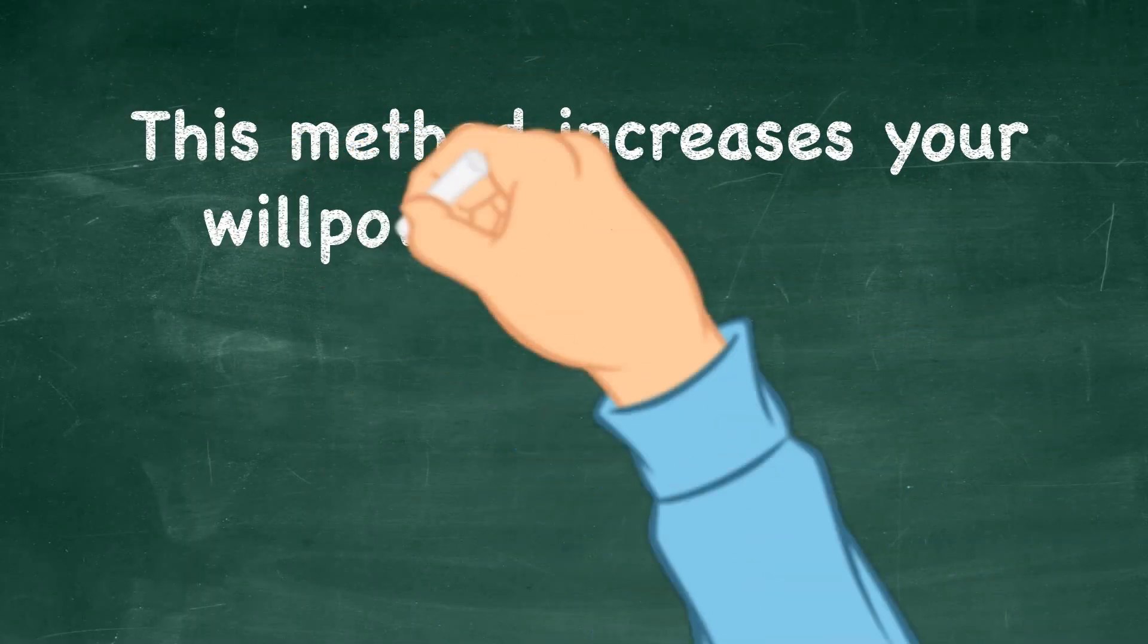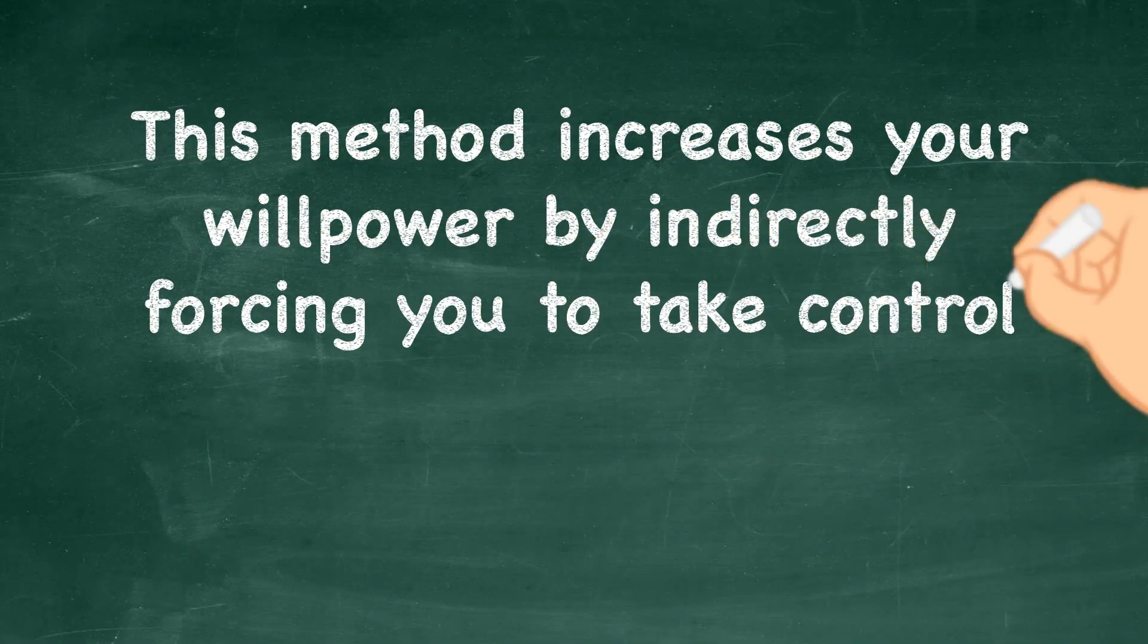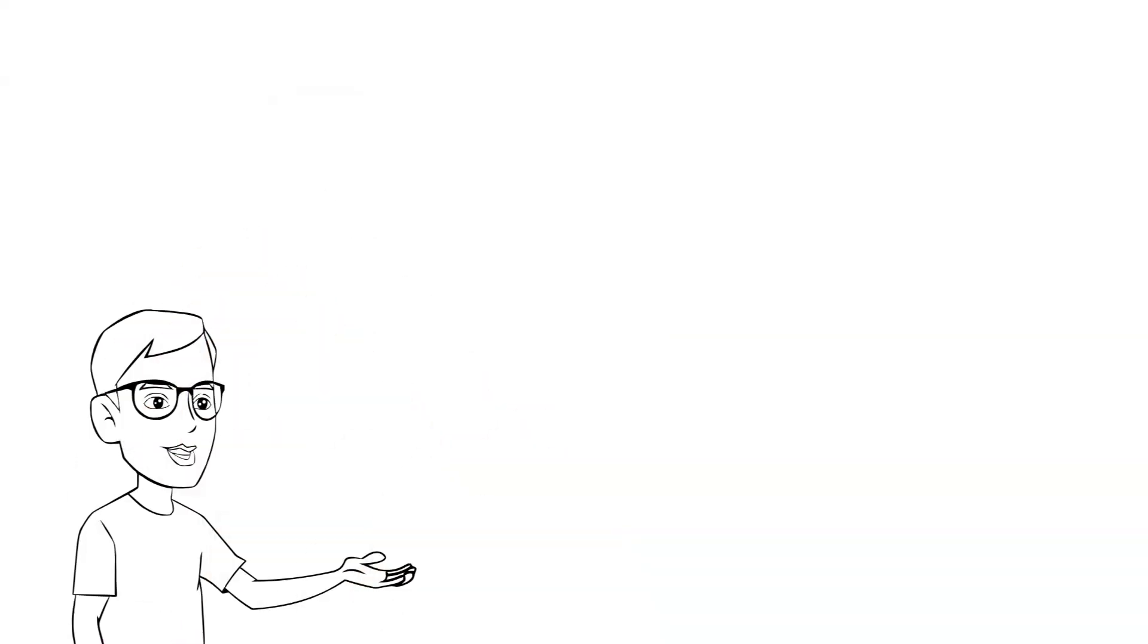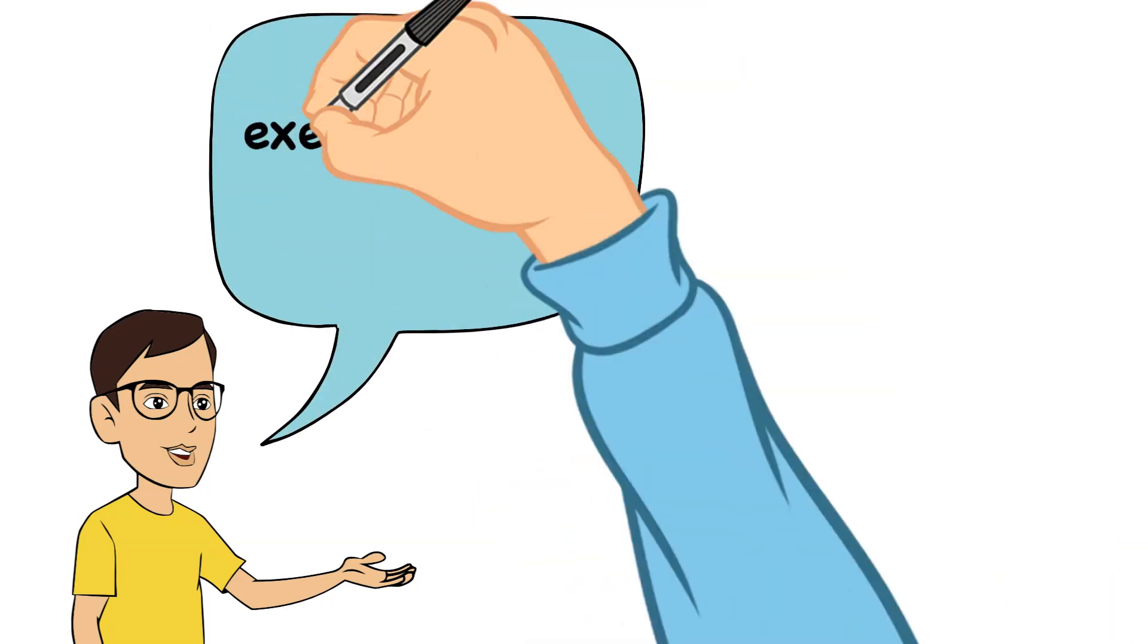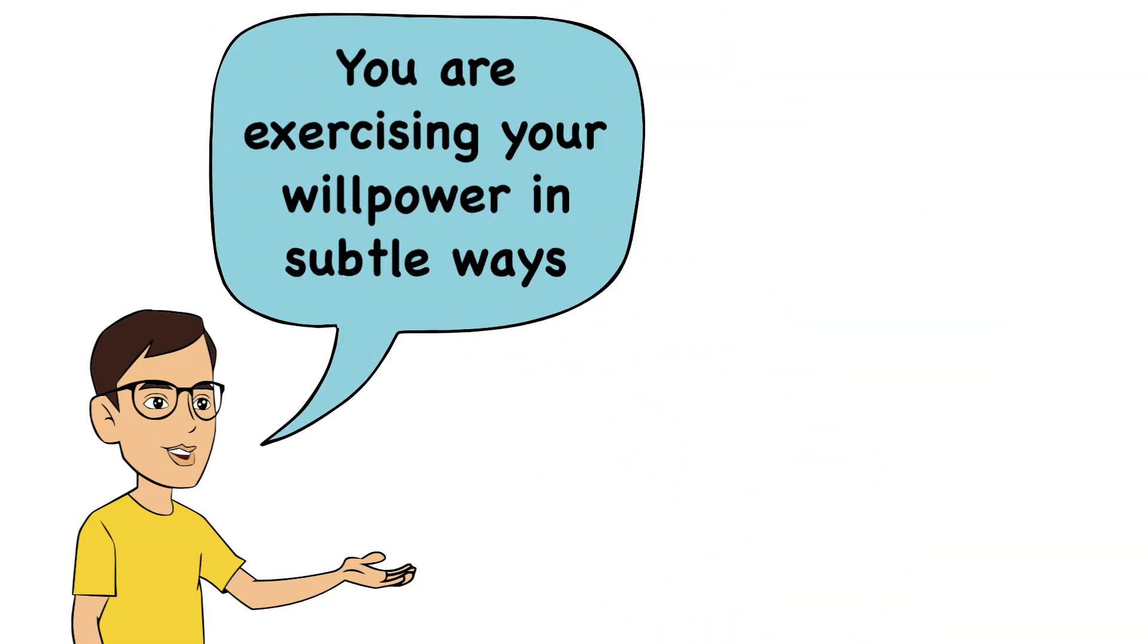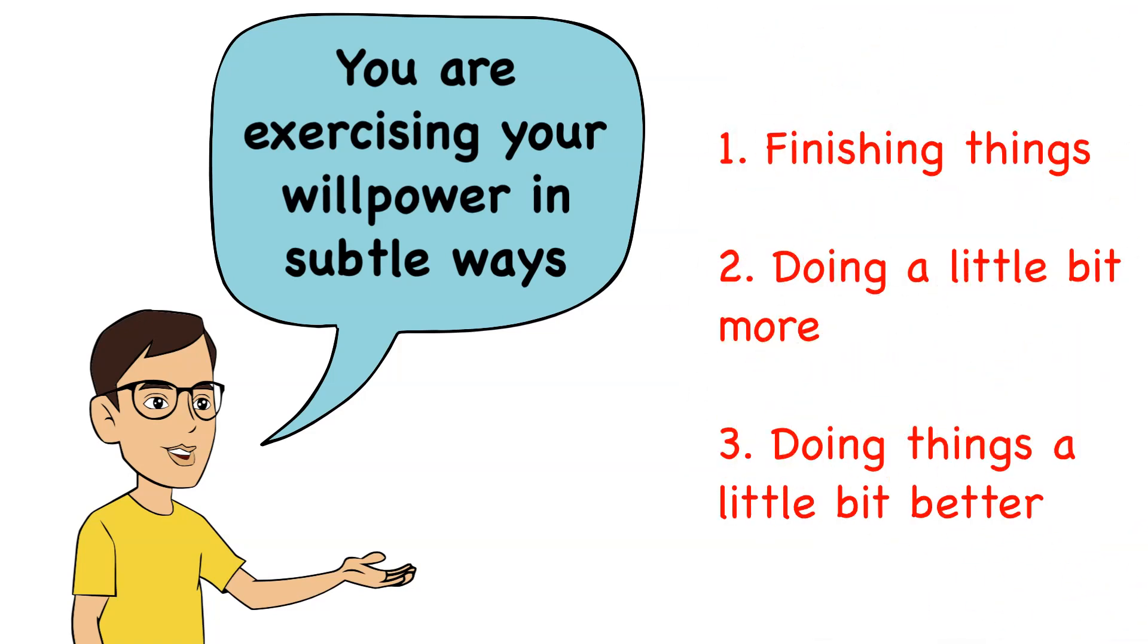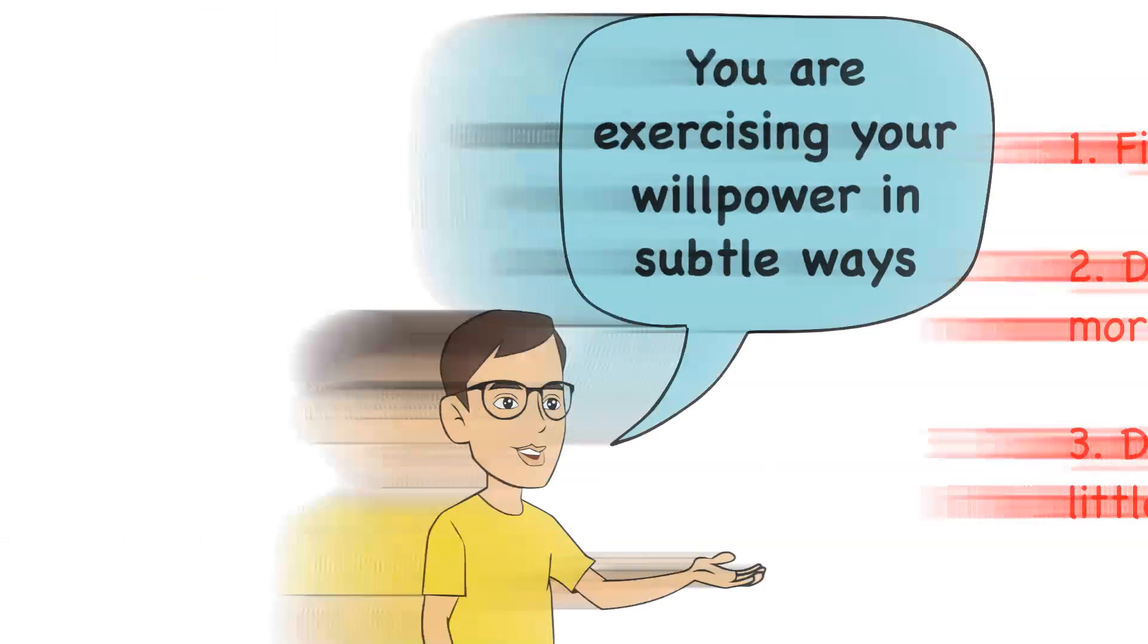This method increases your willpower by indirectly forcing you to take control of your actions so you can do things in a better way. These three ways are so powerful because you are exercising your willpower in subtle ways that seem completely natural like finishing things, doing a little bit more, and doing things a little bit better than you think you can.